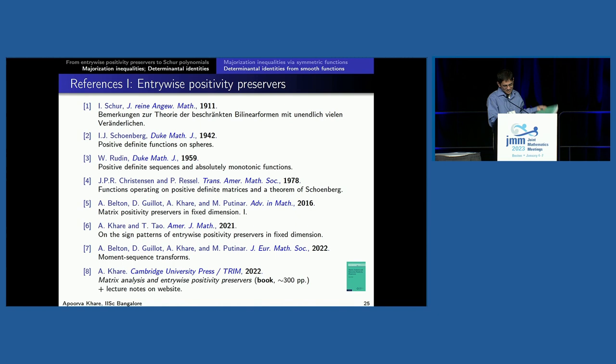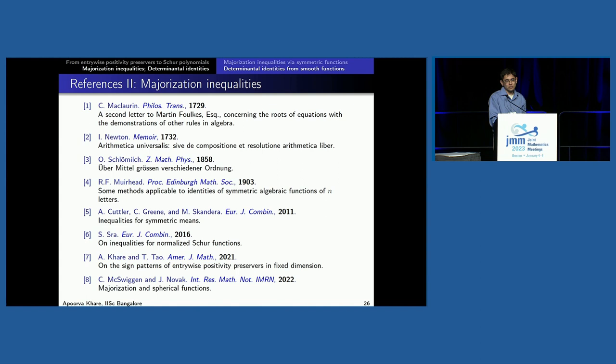I was told by my editor at Cambridge that I should show up this evening to meet her — I've never met her. For part two, majorization inequalities, thanks to Cuttler, Greene, and Skandera who had a very nice survey of previous results. References five and six are the versions connecting Schur polynomials to majorization — ten years ago — and we extended those results to get weak majorization results in reference seven. Reference eight is the big generalization of many of these old results by McSwiggen and Novak to spherical functions on symmetric spaces of non-compact type.